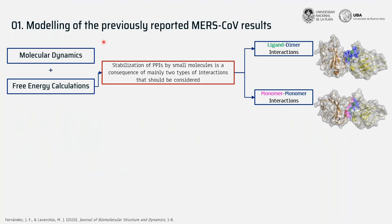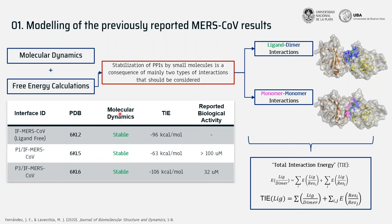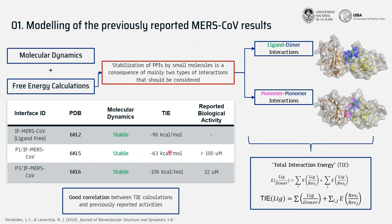For modeling the MERS coronavirus results, we implemented a methodology based on molecular dynamics and free energy calculations. We accounted for the fact that stabilization of protein-protein interactions by a small molecule results not only from ligand-dimer interactions, but also from interactions between monomers induced by the ligand. This was addressed using what we call the total interaction energy — the sum of the ligand-dimer energy and the inter-residue energies between monomers where the ligand is not involved. Simulating the three crystal structures, we found all were stable, with energy values correlating well with reported biological activity.